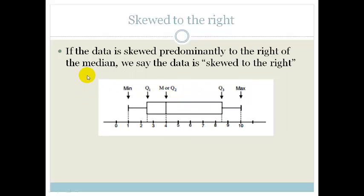However, you can have skewed data. So, if, for example, this distance here from Q3 to the median is much larger than the distance from Q1 to the median, then we say it's skewed to the right, the data is skewed to the right. What that really means is just that there's more data on this side.